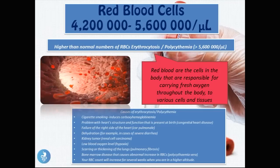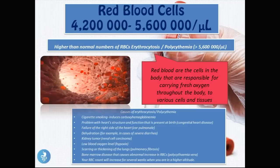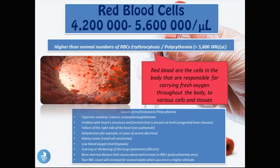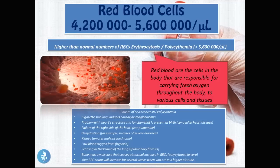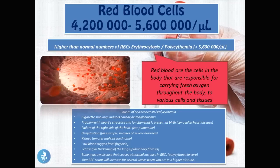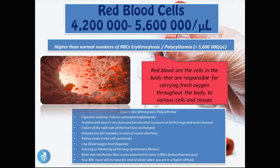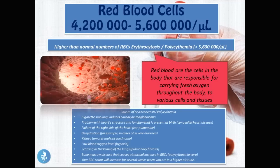A higher than normal number of red blood cells is called erythrocytosis or polycythemia — when the value is greater than 5.6 million per microliter. One cause is cigarette smoking, which induces carboxyhemoglobinemia, putting pressure on body tissues because they don't receive enough oxygen, causing the body to increase red blood cell production so that more oxygen can be delivered to tissues.